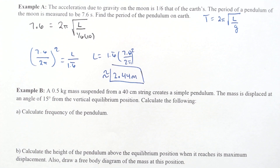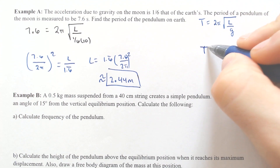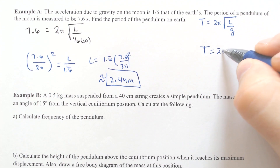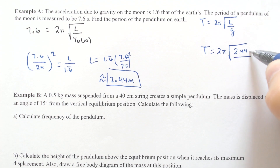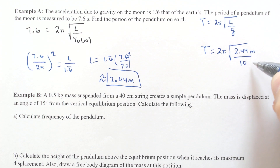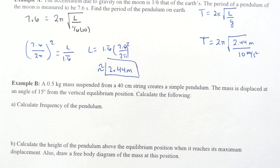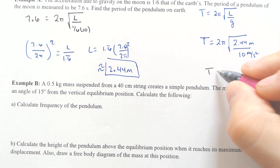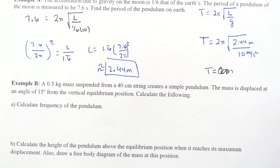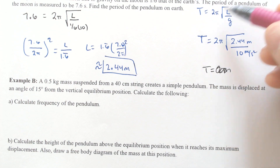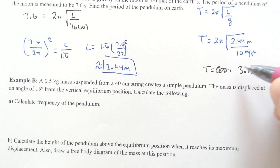Once we know the length, we can find the period on Earth, because the period on Earth would be two pi times the square root of the length, 2.44 meters, divided by gravity, which is 10 meters per second squared. The meters cancel out, and you end up with a period of 3.1 seconds.